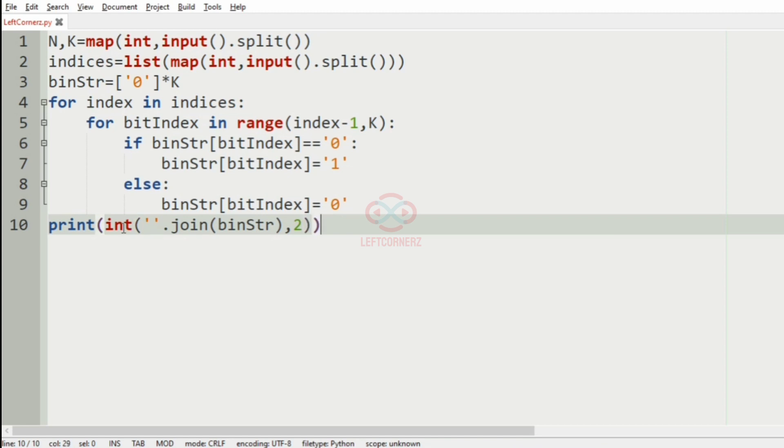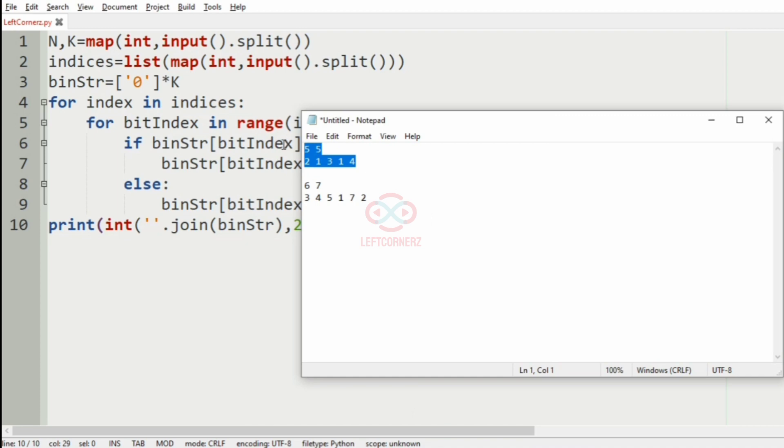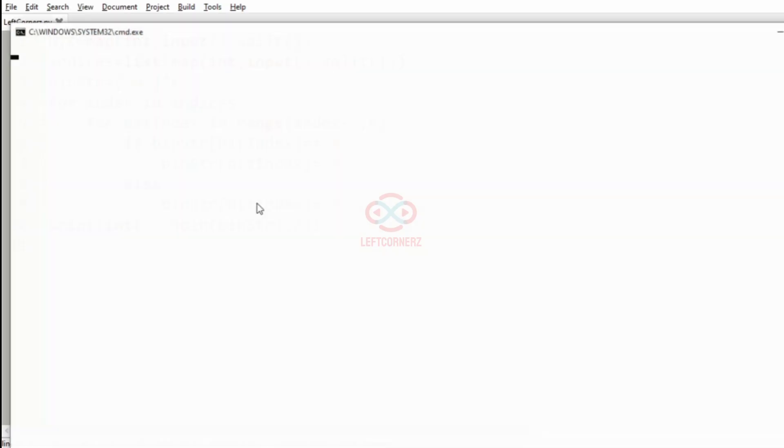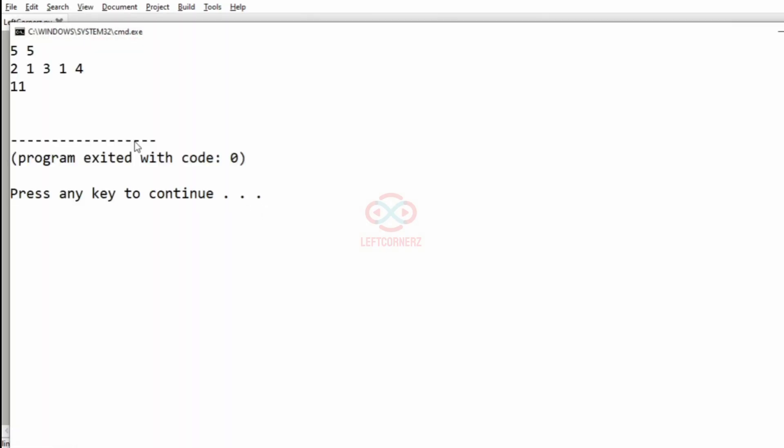And we have comma two. So now let us run our program and pass our first test case.